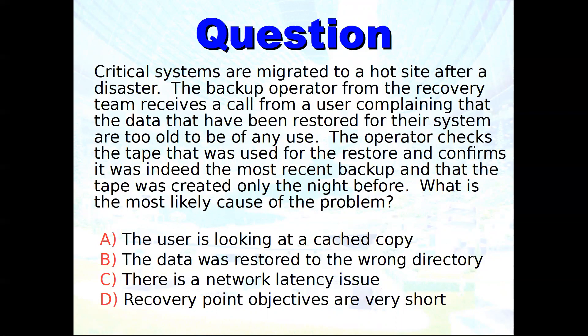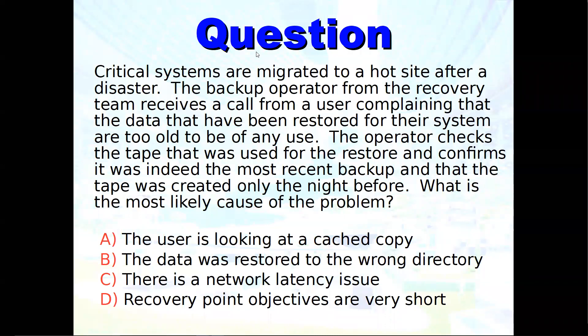This sounds like — we know the hardest part in the development life cycle is requirements. So something happened in the BIA and a requirement was missed. It sounds like the requirement that was missed was the recovery point objective. Didn't you catch the part that said the data can't be more than an hour old? We wrote down that nightly backups would meet the requirement — no, nightly backups don't meet that requirement. Our recovery point objectives are very short. So the answer here is one of your major criticality metrics that you look for in a BIA.